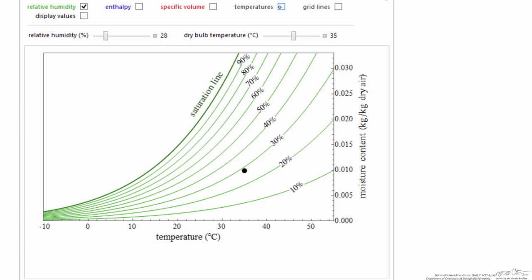Now what we want to do is look at relative humidity at about 28%, and the temperature is about 35 degrees C. So I'm going to display, and it's showing three temperatures. This is the dry bulb temperature.